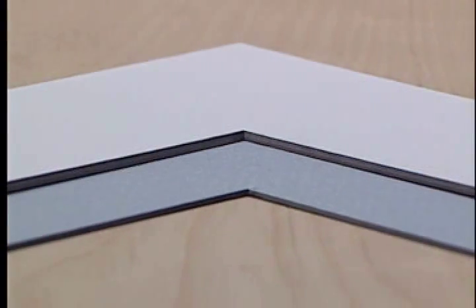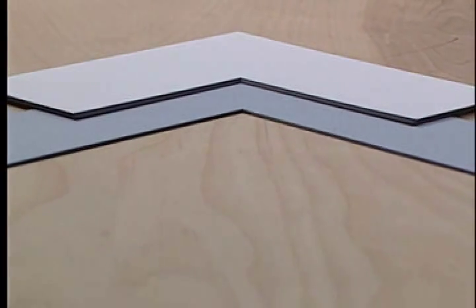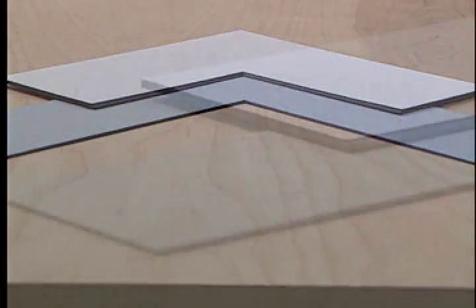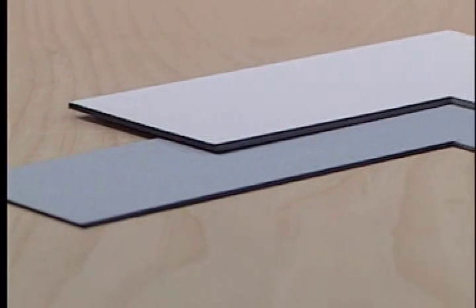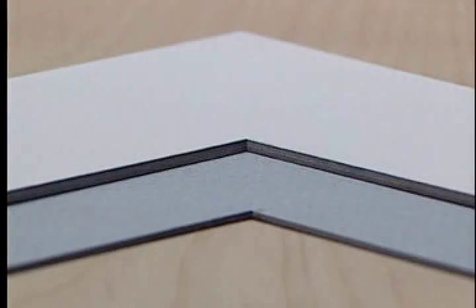For an even more dramatic look, colored core matboard is available, such as black core matboard. Black core matboard is popular for matting and framing black and white photography or other instances where the contrast difference complements the art piece.